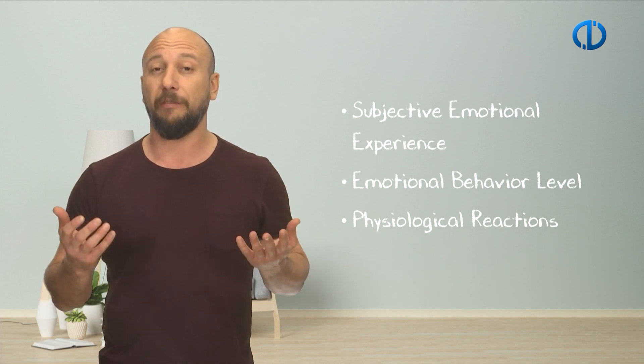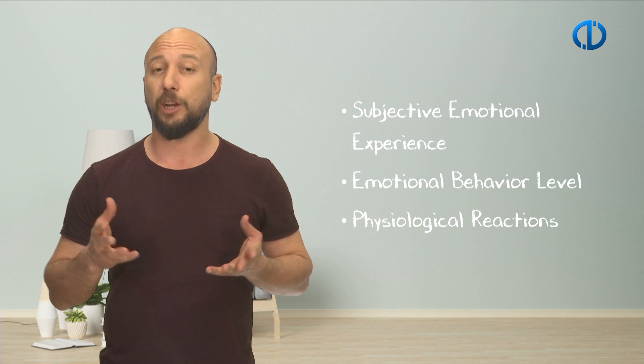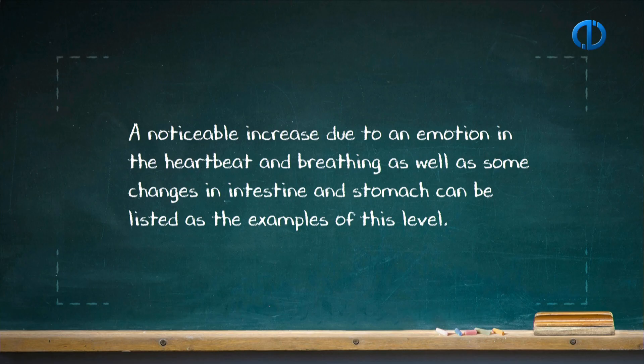Emotions emerge at different levels in the body. Although different theories define the order of levels in different ways, the following three levels are observed in every emotion experience: the first is subjective emotional experience, in which each individual experiences emotions according to their perceptional framework; the second is the emotional behavior level, where behavior based on a specific emotion gives clues to people around; and the third is physiological reactions in the body, such as increased heartbeat, breathing, and changes in the intestine and stomach.